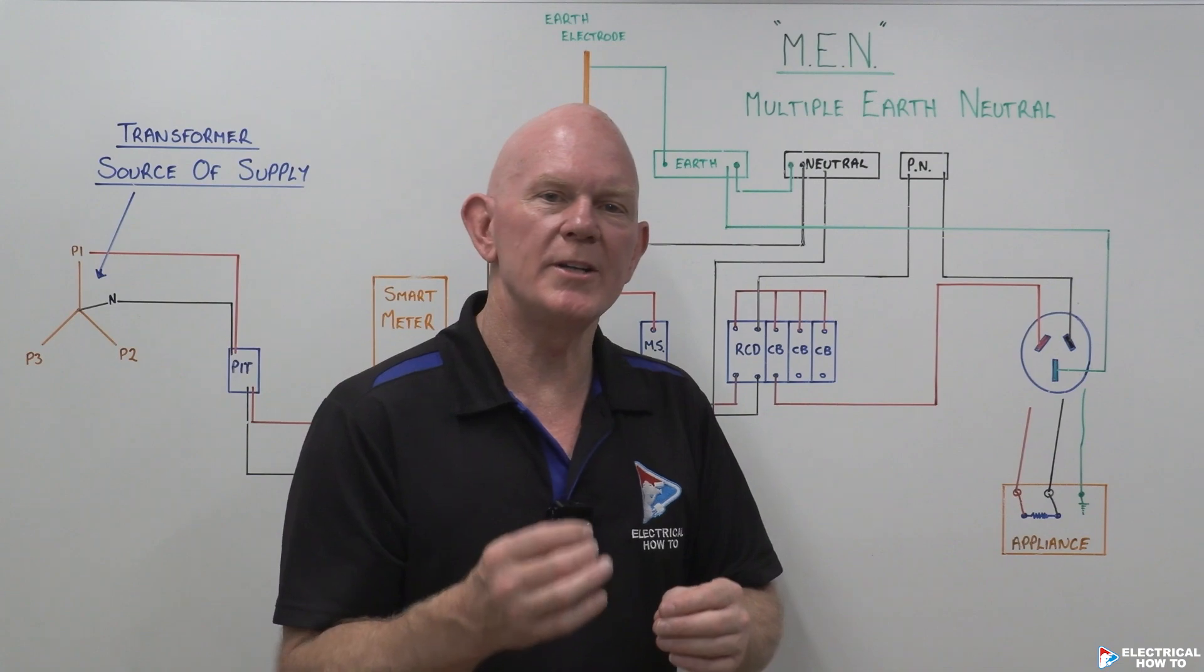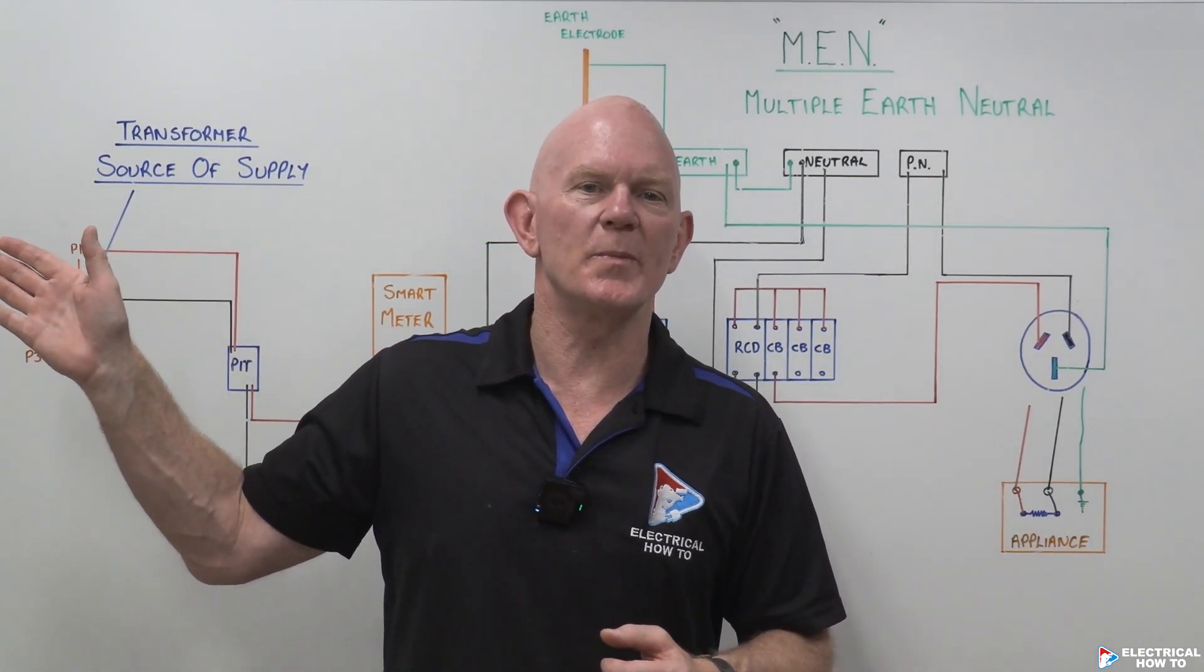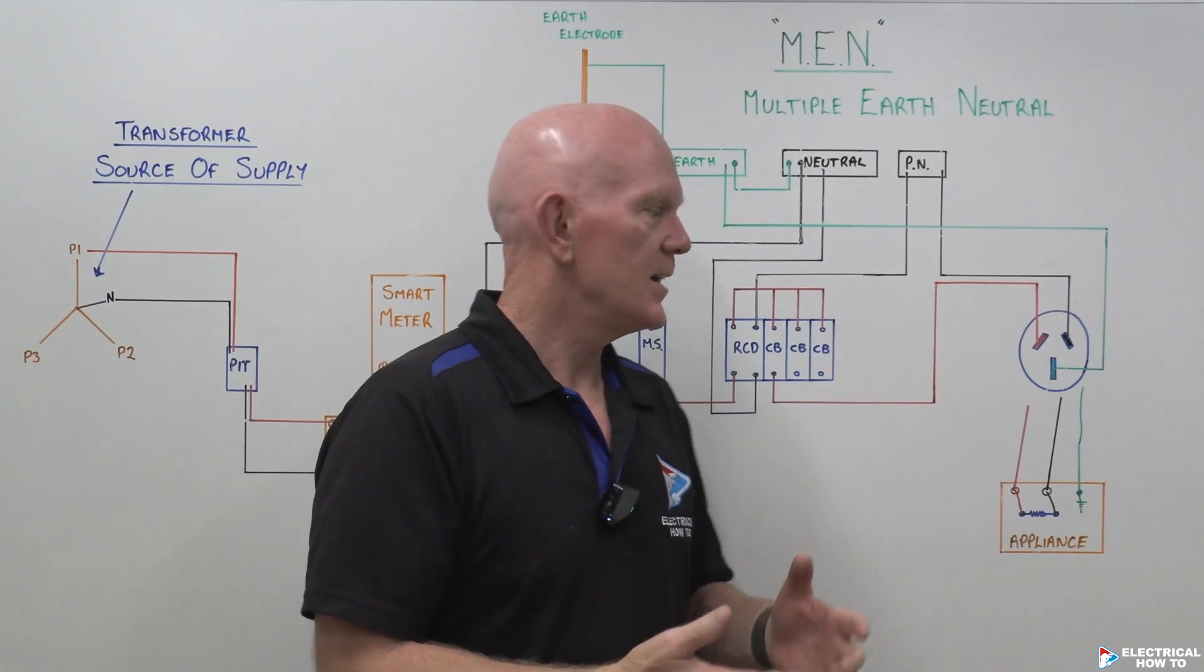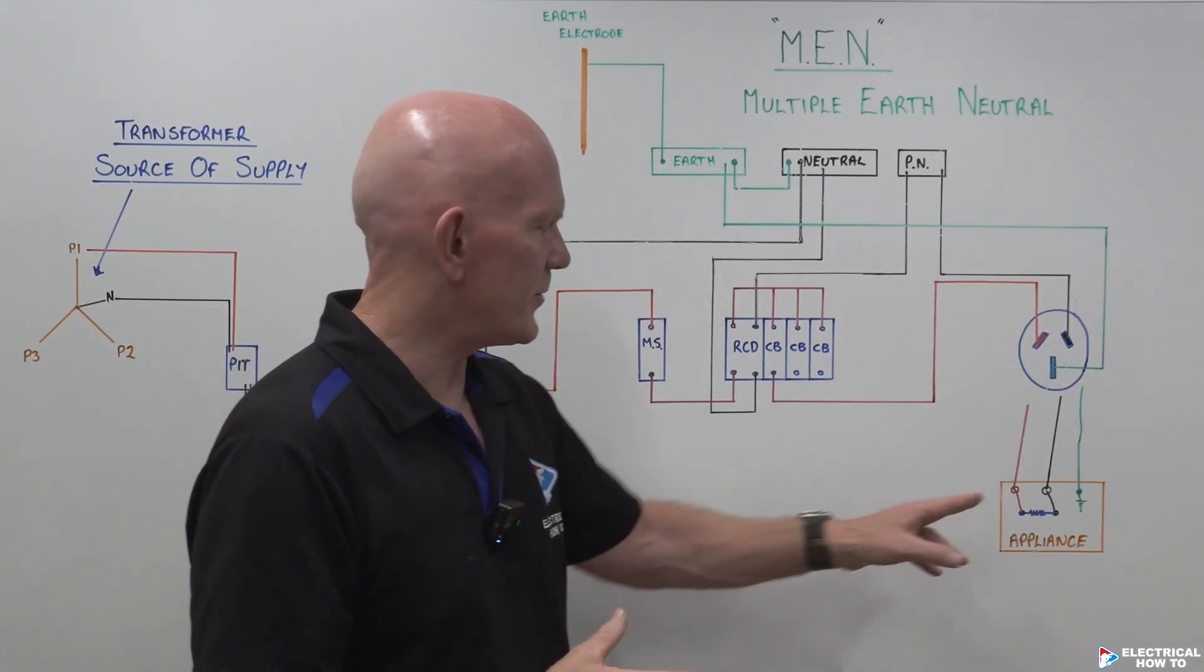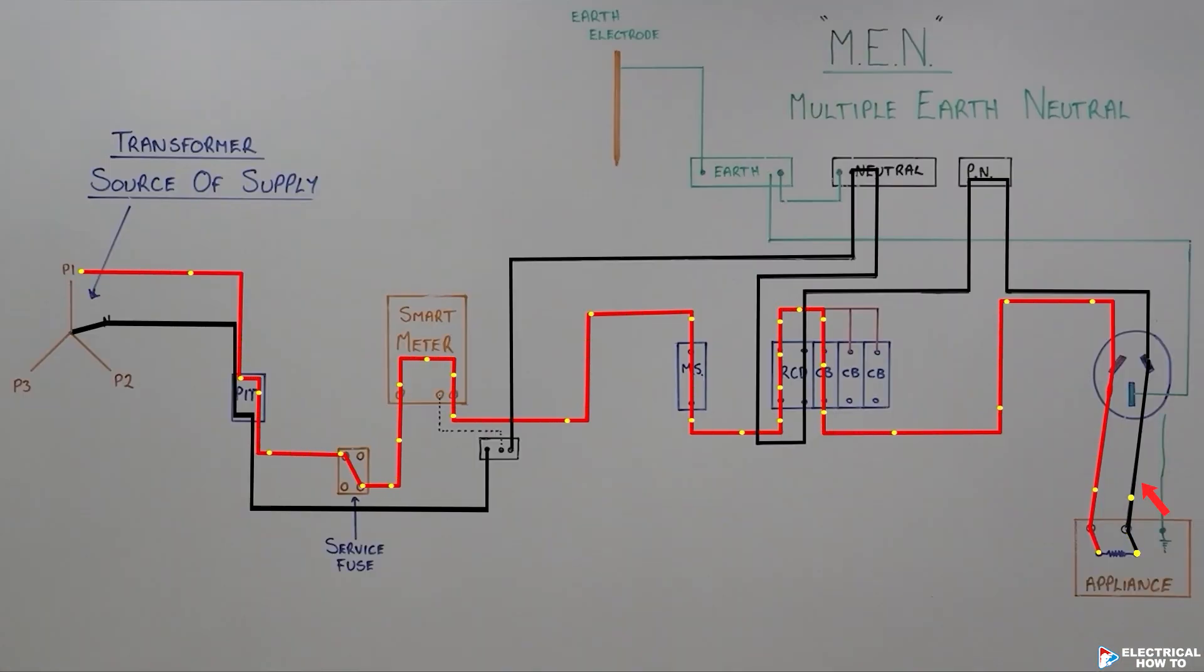The current will always try and get back to the source of supply, which is our transformer. And how's it going to do that? It's going to do that via our return path, which is our neutral cable. So now we can follow this neutral. We've got current flowing in that neutral right now, all the way up.